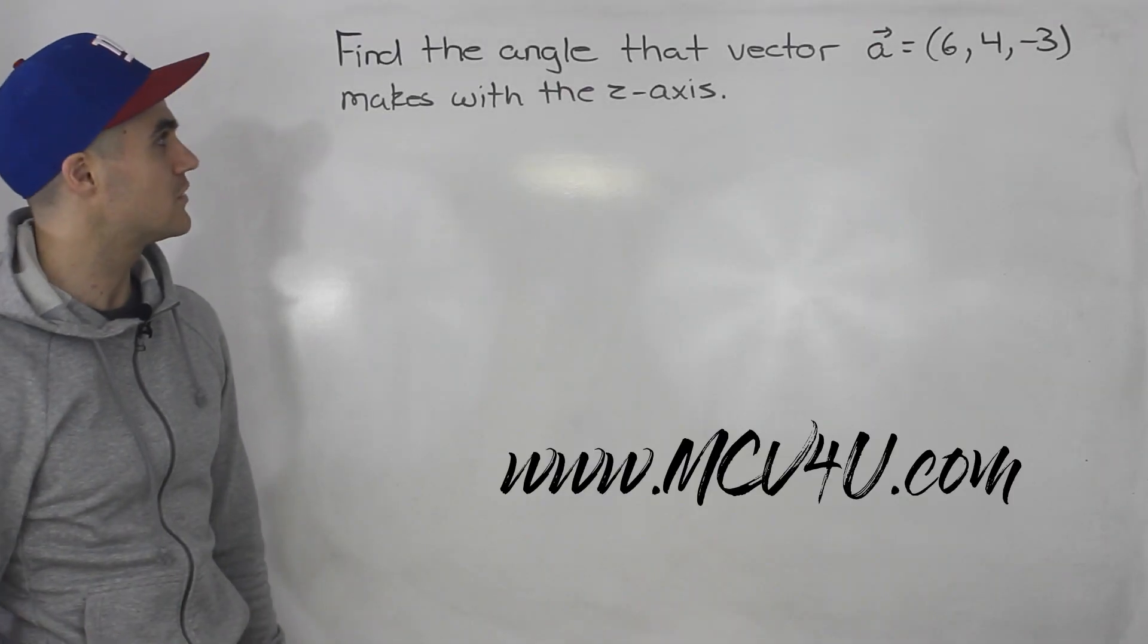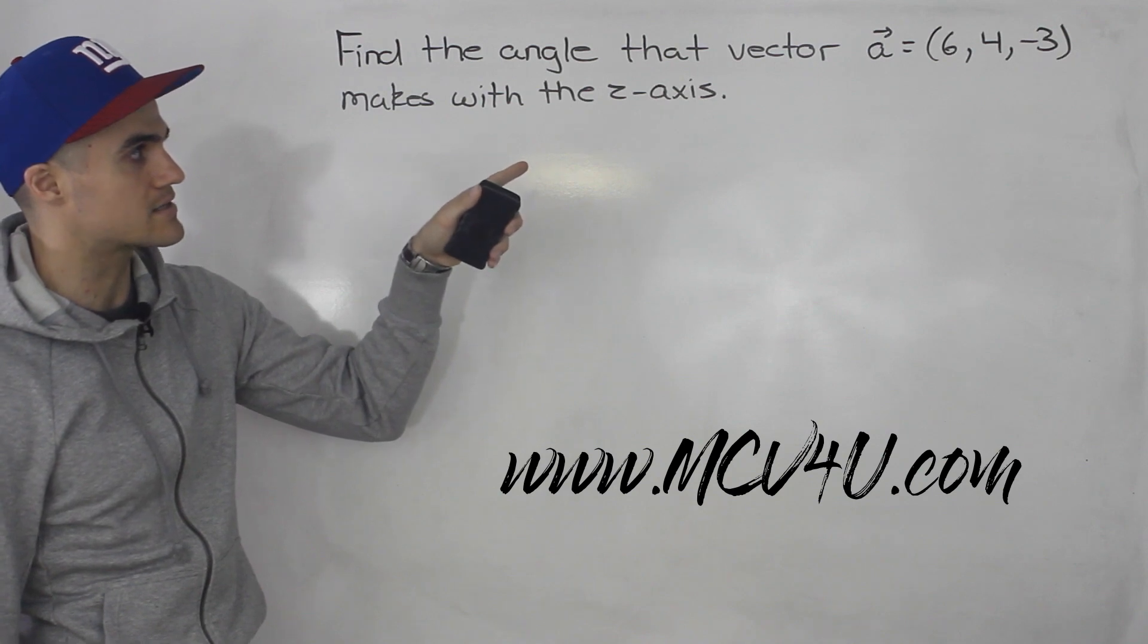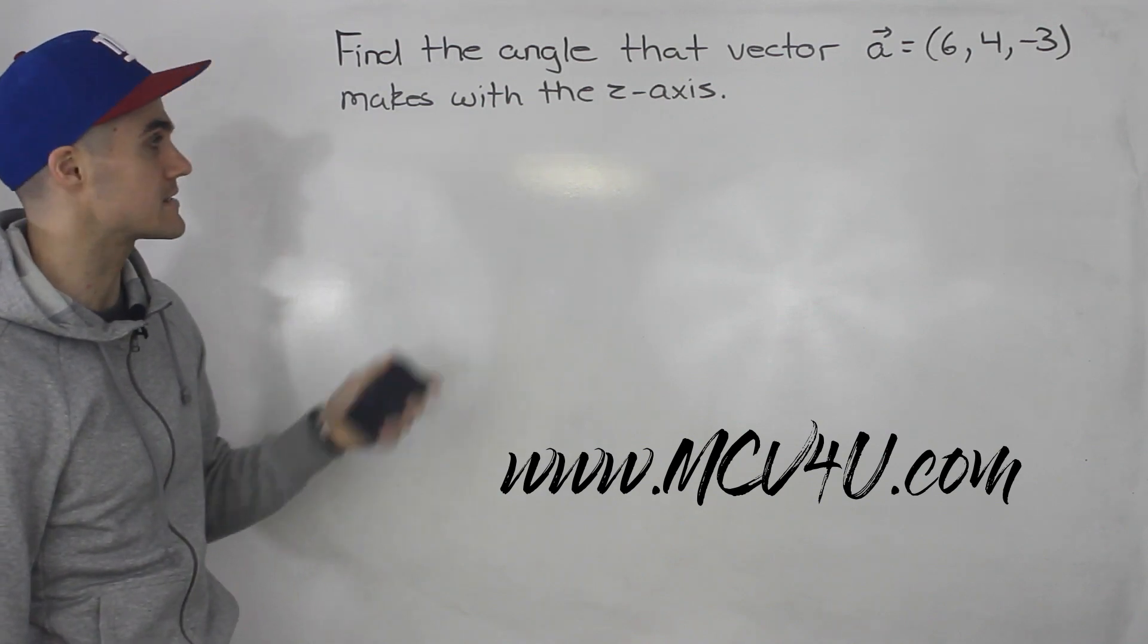What's up everybody, welcome back. Patrick here. Moving on to the next question, we have to find the angle that the vector a that has component 6, 4, negative 3 makes with the z-axis.